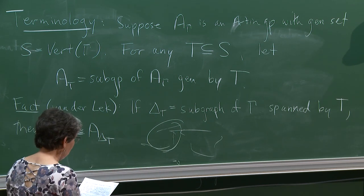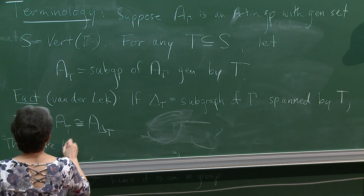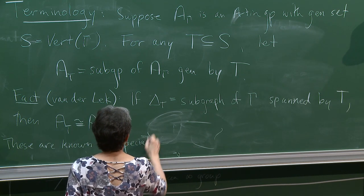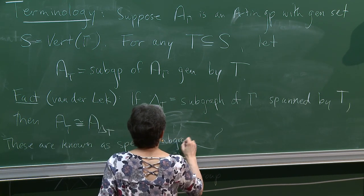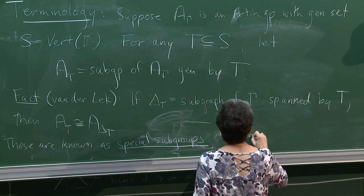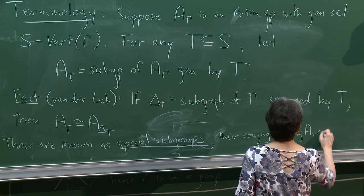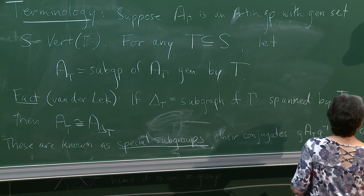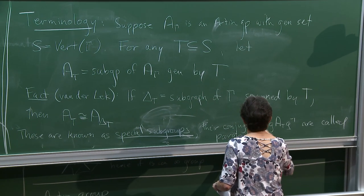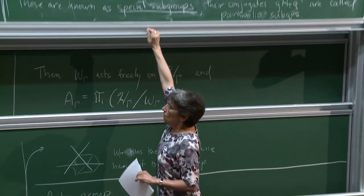These subgroups A_T are called special subgroups. More generally, their conjugates - g A_T g inverse for any g in A gamma - are called parabolic subgroups. I just want to be able to use this notation going forward.